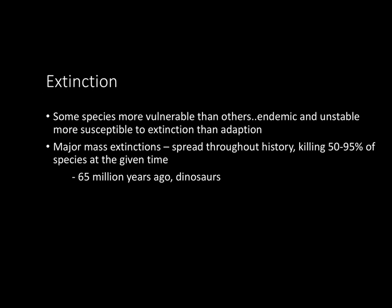Extinction — some species are far more vulnerable than others. The word 'endemic' is important to know: an endemic species is one that only lives in one very specific place. If something happens to that place, the whole species could easily be wiped out. There have been five major mass extinctions in history, spread throughout time. On average, these mass extinctions killed between 50% and 95% of all species. The most well-known occurred 65 million years ago when the dinosaurs went extinct.